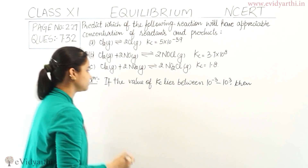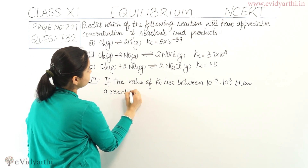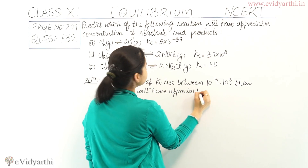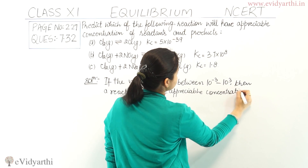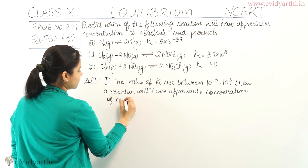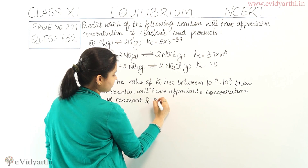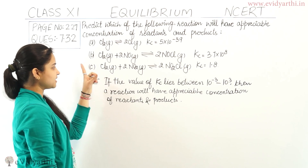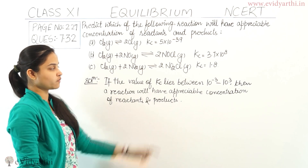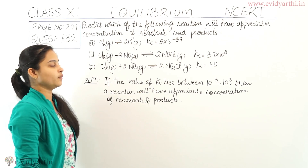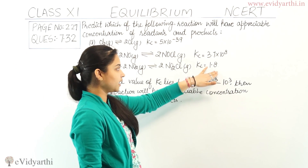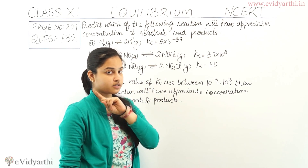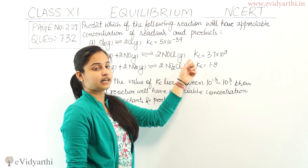The third reaction is Cl₂(g) plus 2NO₂(g) forming 2NO₂Cl(g), with a Kc value of 1.8. The other reactions' Kc values do not lie between 10⁻³ to 10³, so those two values are excluded.